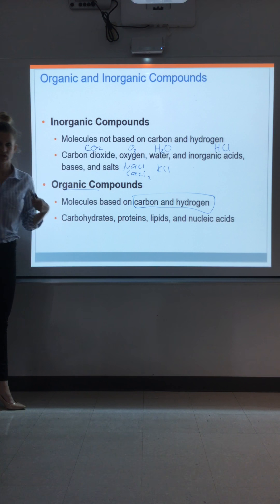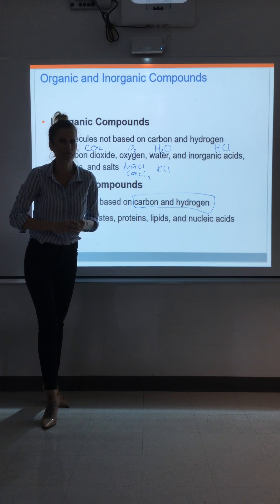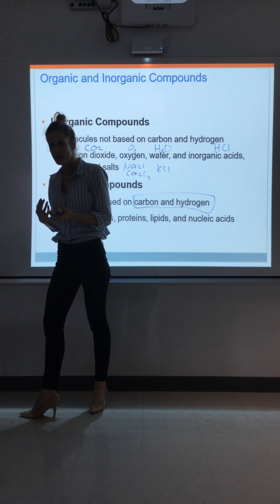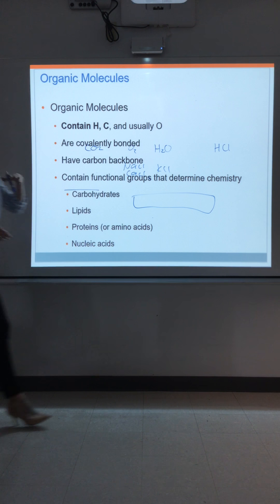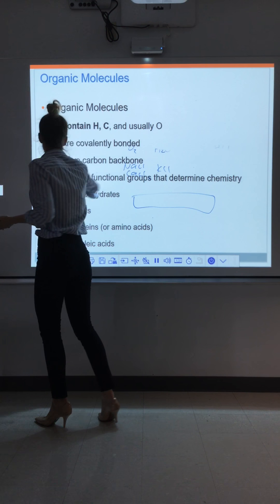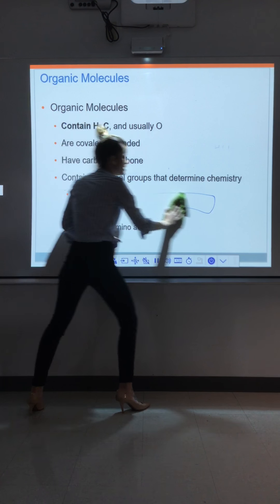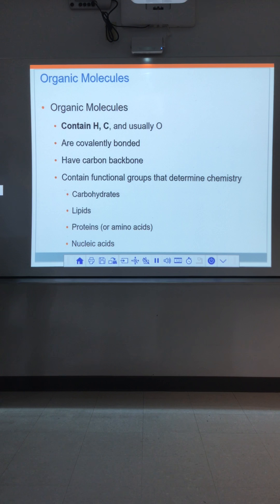We've got lots of different inorganic things in our body. Carbon dioxide, for example, and oxygen — the two respiratory gases. Carbon dioxide is CO2, it's got carbon but it does not have hydrogen, so it's inorganic. Oxygen doesn't have either. Water has hydrogen but no carbon, so it's inorganic. There are some acids and bases that are inorganic and some that are organic. For example, hydrochloric acid has hydrogen but no carbon, so it's inorganic. Salts — like sodium chloride, calcium chloride, potassium chloride — all these ionic compounds are inorganic.